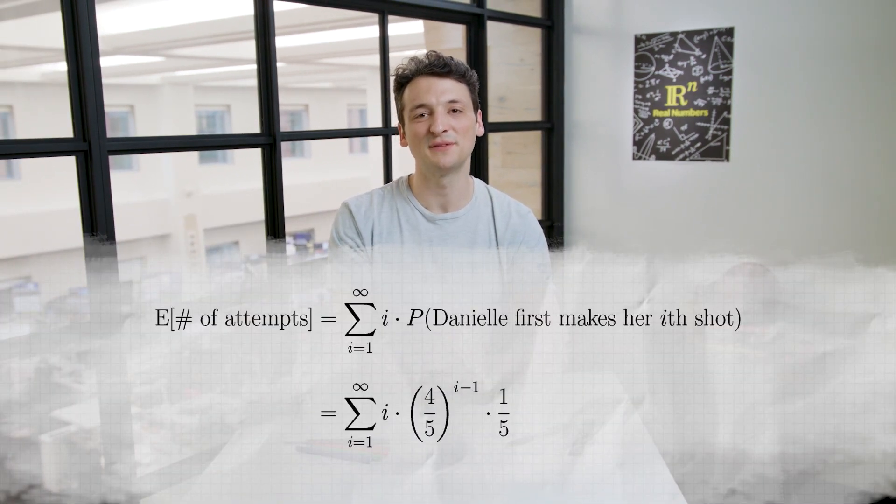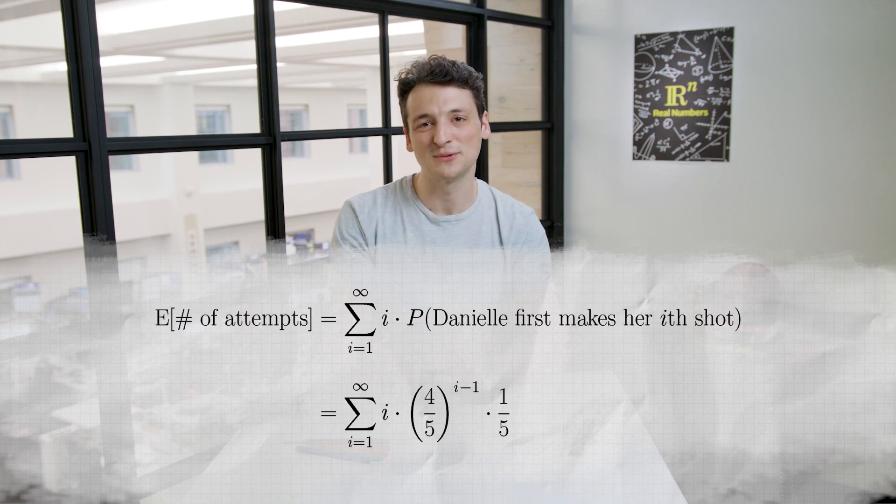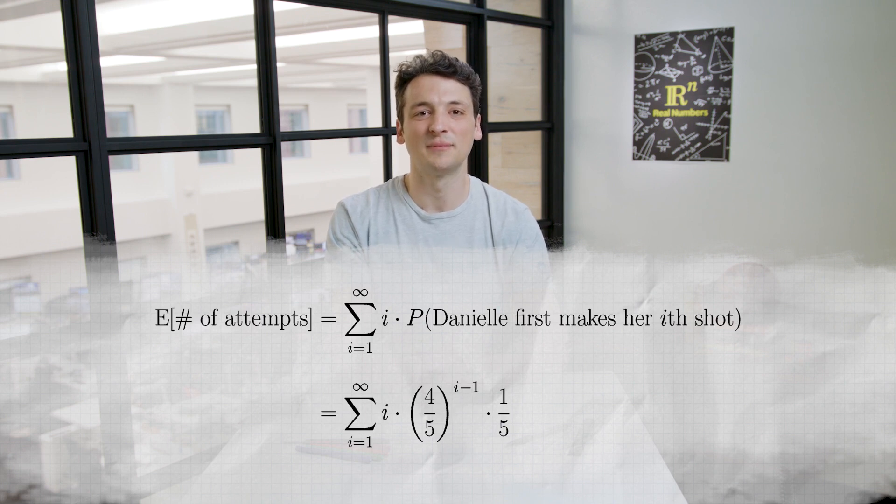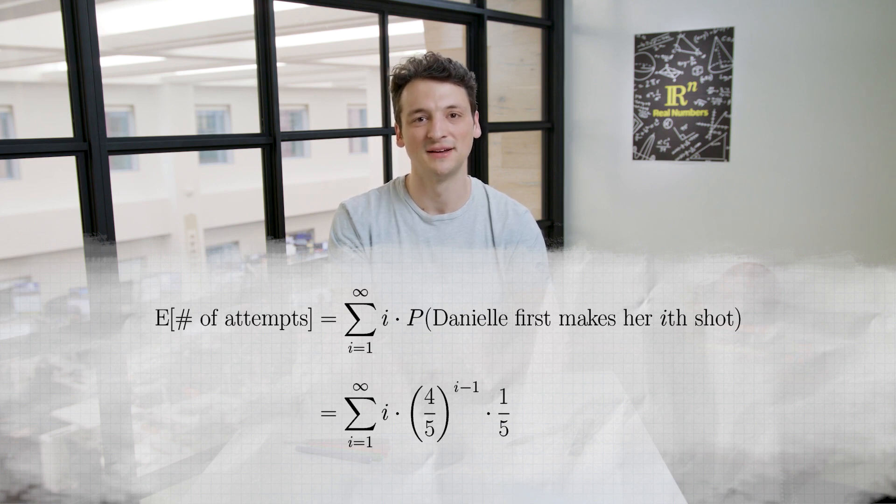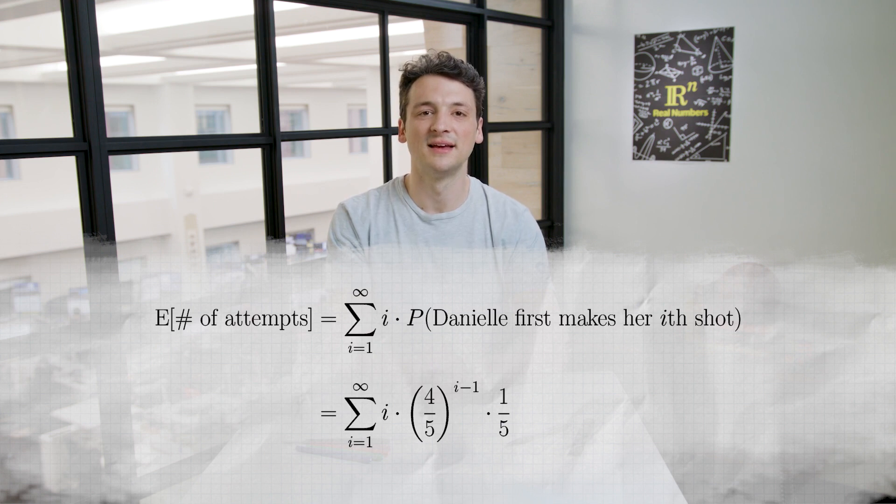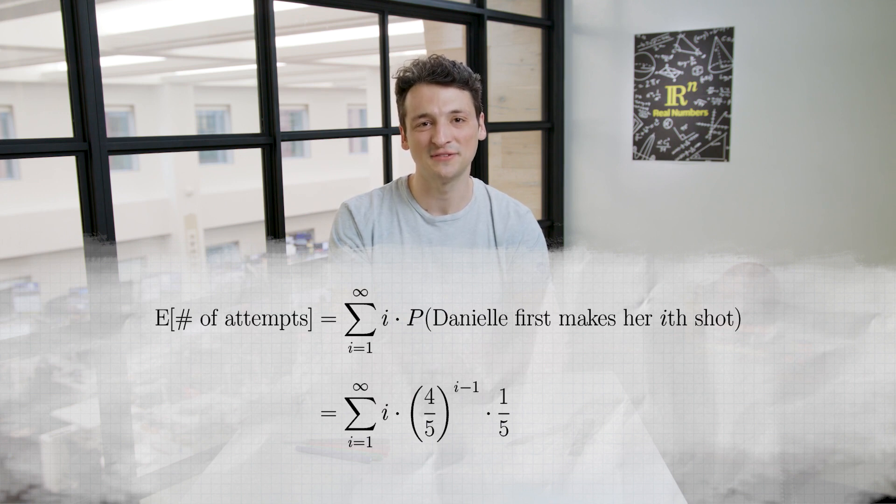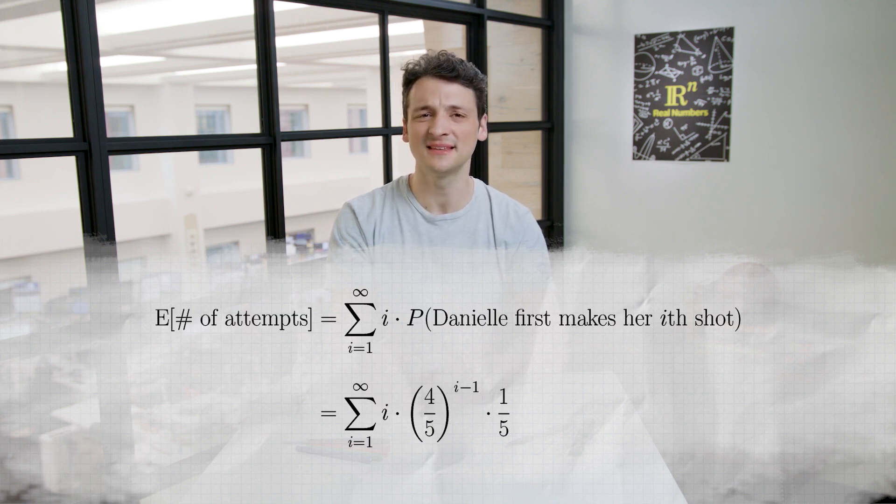The expected value of the number of attempts is the sum from i equals one to infinity of i times the probability Danielle first makes her ith shot. The probability Danielle first makes her ith shot is the probability Danielle misses i minus one shots and then makes one, or four-fifths to the i minus one times one-fifth. So the expected value of the number of attempts is the sum from i equals one to infinity of i times four-fifths to the i minus one times one-fifth. Hmm, this looks a little tough to compute.